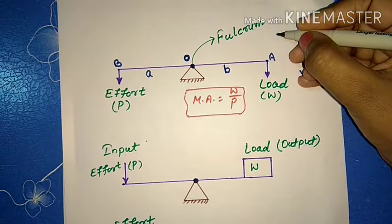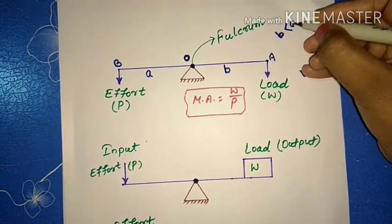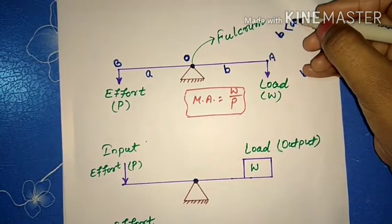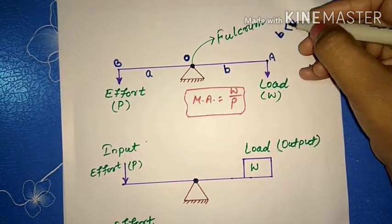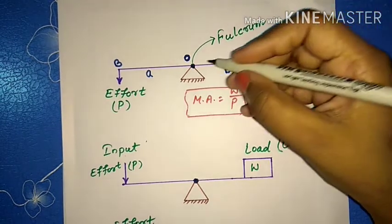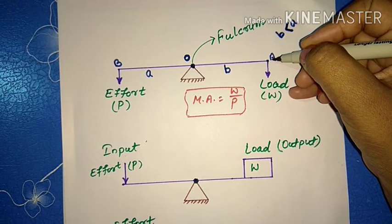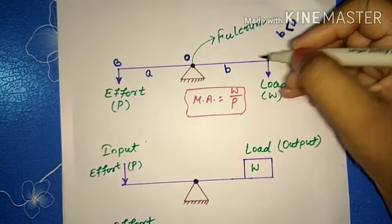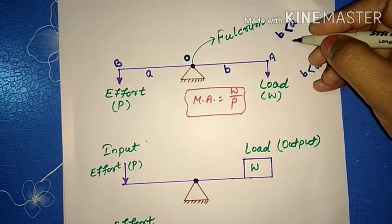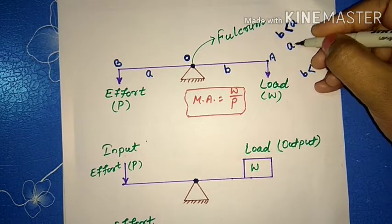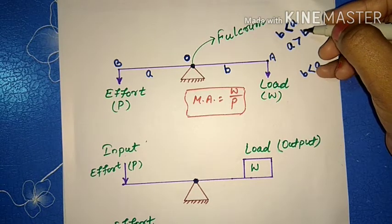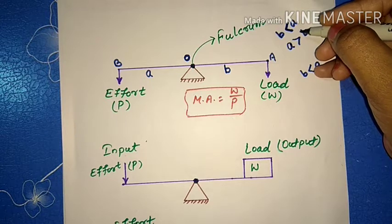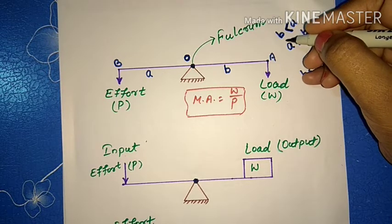To lift a load with least effort, we need to minimize the distance of the load from the fulcrum compared to the distance of the effort from the fulcrum. That means: the distance of the load from the fulcrum should be less, and the distance of the effort from the fulcrum should be greater — only then can we lift the load with less effort.